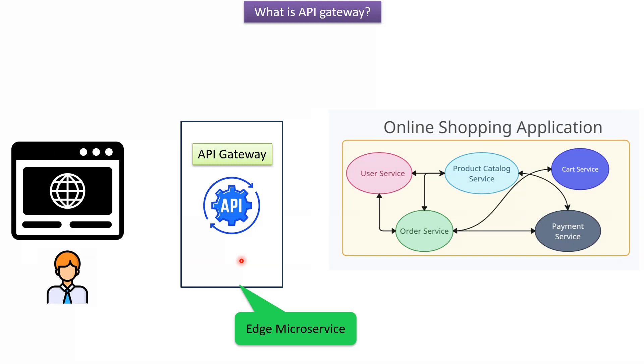Here you can see the API Gateway, which sits between the client UI and the different online shopping microservices. Suppose the client wants to make a call to the product catalog service — the client sends the request to the API Gateway. The API Gateway routes the request to the product catalog service, which processes the request and sends the response back to the API Gateway. The API Gateway then sends the response back to the client UI. Similarly, if the client UI wants to call the user service, it sends the request to the API Gateway, which routes it to the user service.